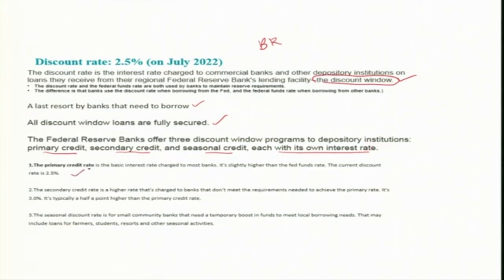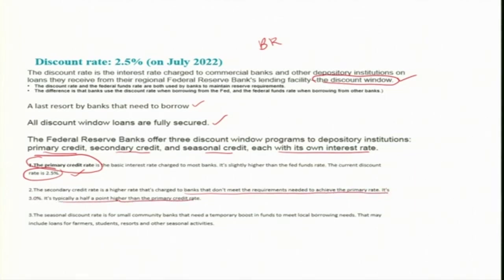The Federal Reserve banks offer three discount window programs to depository institutions. One is primary credit — the basic interest rate charged to most banks, slightly higher than the Fed Fund rate; the current discount rate is 2.5 percent. The second is secondary credit — a higher rate charged to banks that don't meet requirements for the primary rate, typically half a point higher at 3 percent. Additionally there is seasonal discount rate for small community banks that need a temporary boost in funds to meet local borrowing needs, including loans for students, agriculture, and other seasonal activities.